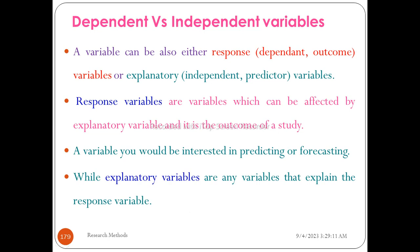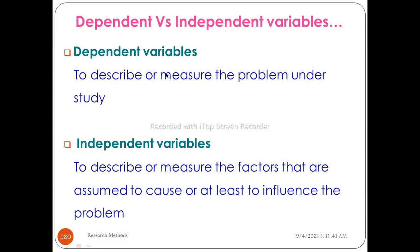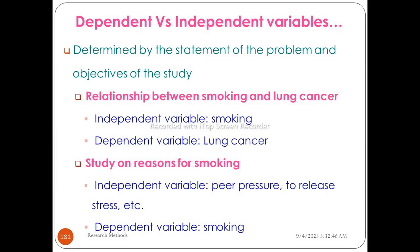The dependent variable is used to describe or measure the problem under the study. It is determined by the statement of the problem and the objective of the study. This determines what the dependent and independent variables are in your research.